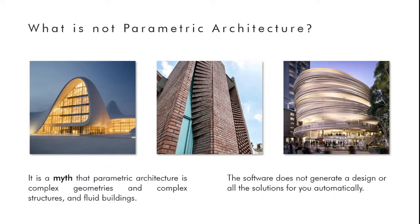Once we've broken these myths, let's understand how we reach parametric architecture and computational design. People think it is all about software — tools like Rhino, Grasshopper, Houdini, Dynamo, and Revit. But it is not about the software. It is a designing style — just like minimalism or brutalism — and is the style of the 21st century, where we incorporate computers to help us with the designing process.